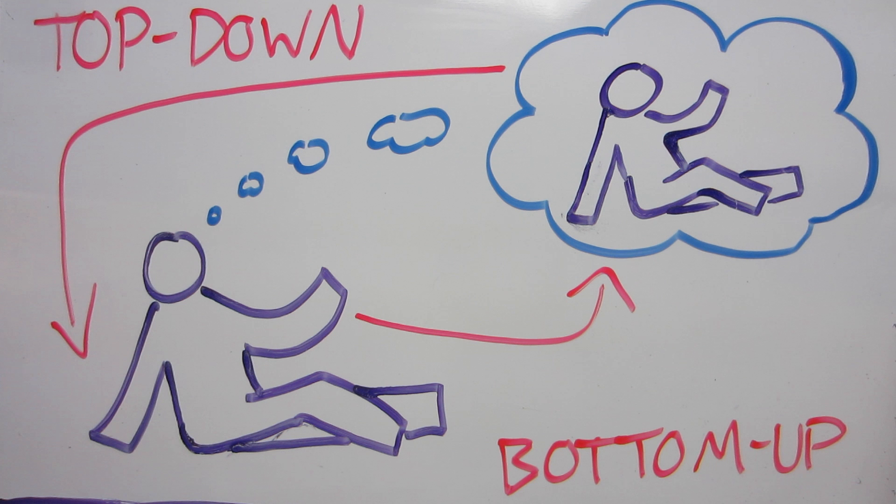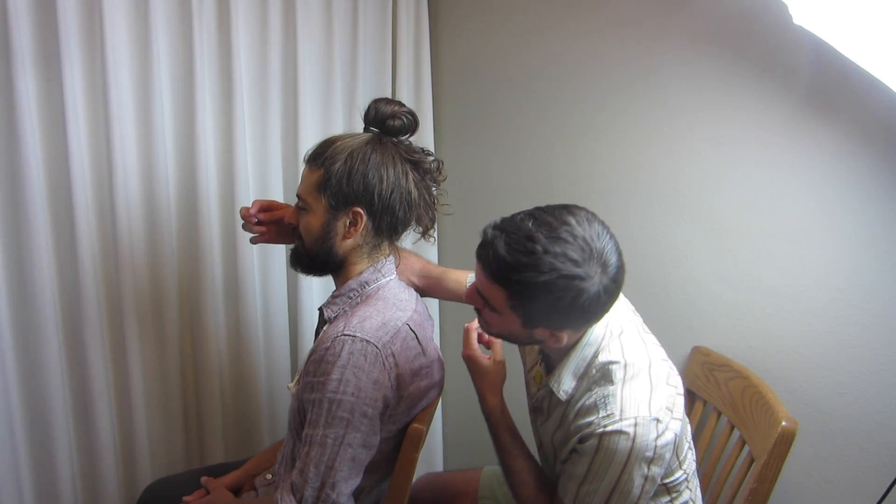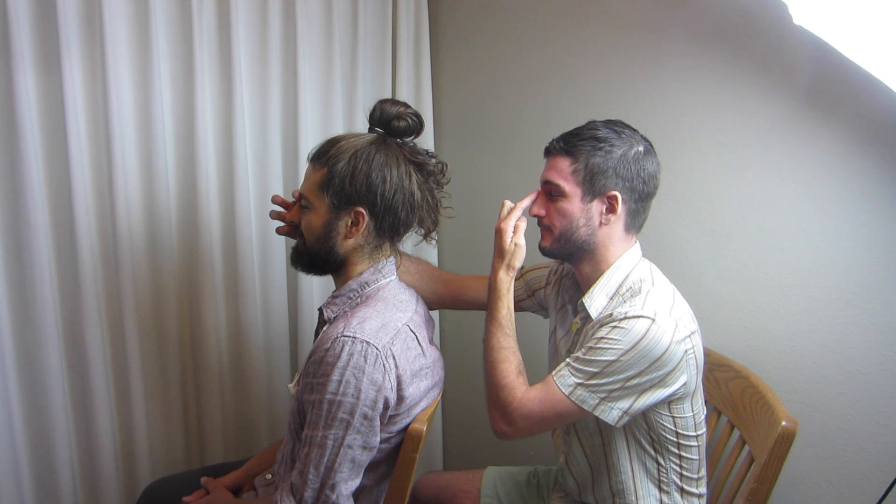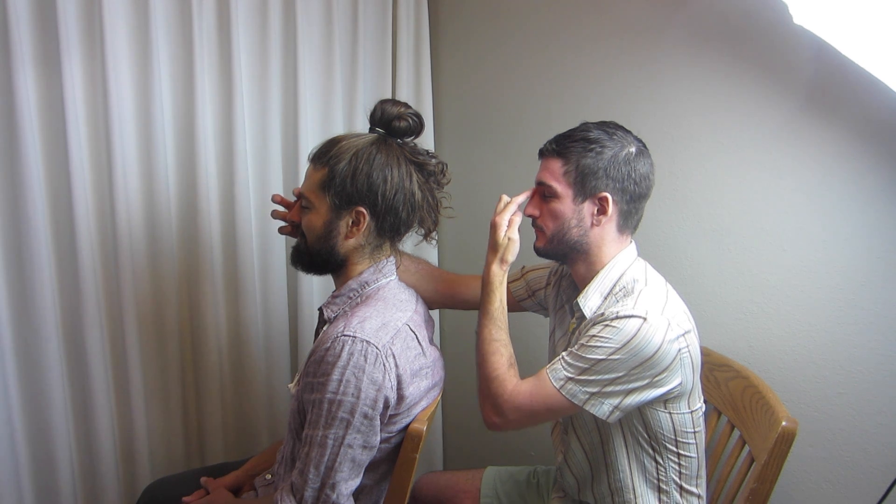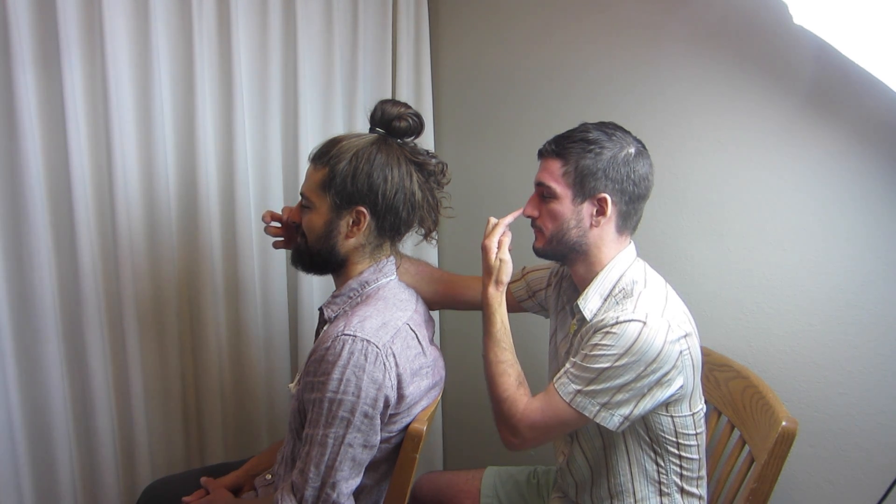The rubber hand illusion is just one way to mess with this system. Another variant you can try with a friend is called the Pinocchio effect. You sit behind your friend with your eyes closed and run a finger along your own nose. At the same time, use your other hand to reach up and run a finger along your friend's nose. Some people will begin to feel that their nose has grown very long as their brain gets the impression that they're feeling the touch of their extended hand on the tip of their own nose.